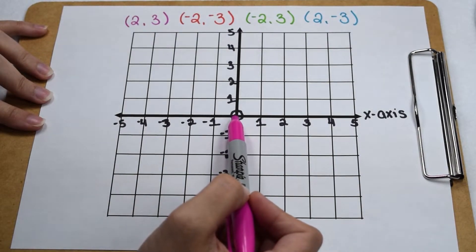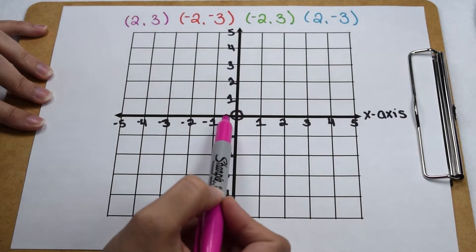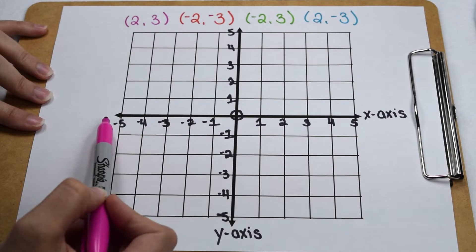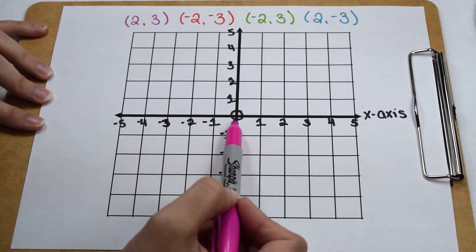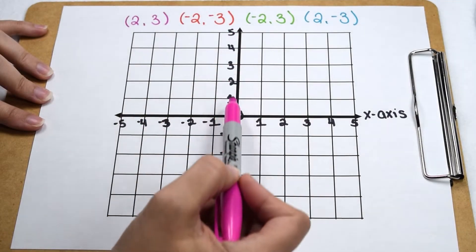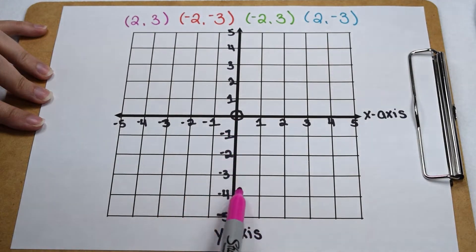If we have a positive x-coordinate, it's going to go to the right of the origin. Negative x-values are going to go to the left of the origin. Positive y-values are going to extend above the origin, and negative y-values are going to extend below the origin.